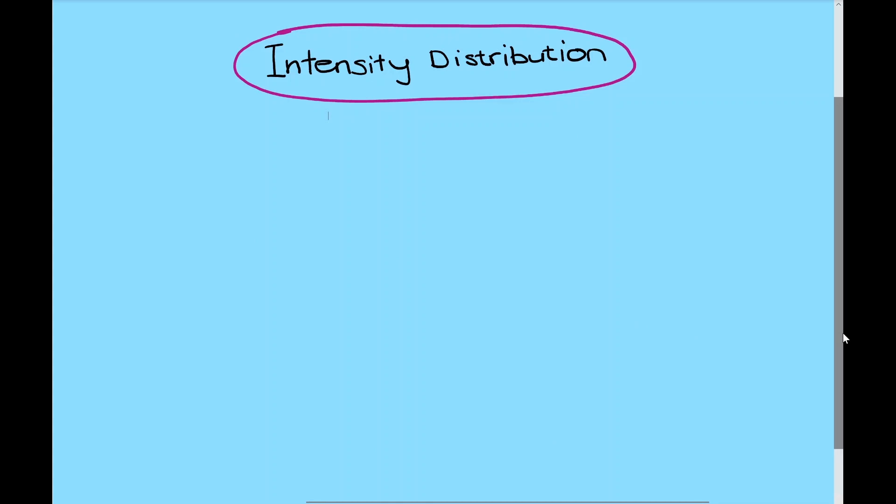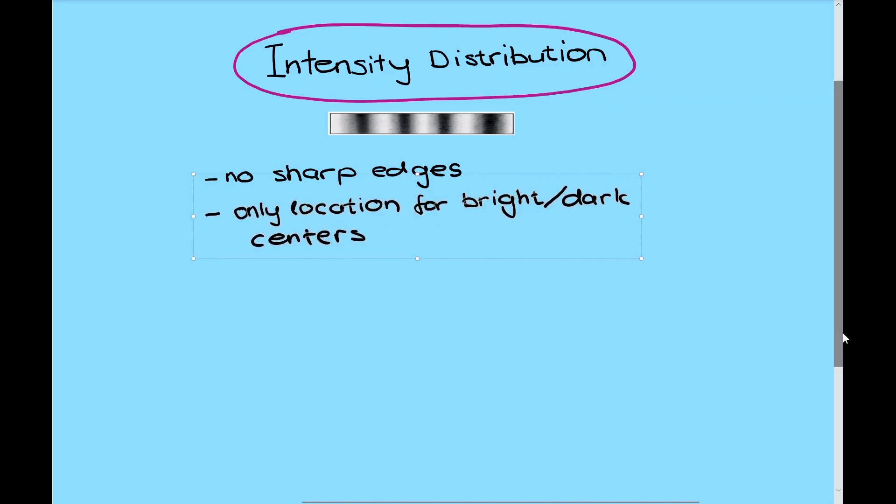Now let's have a look at the intensity distribution of the fringes. Bear in mind that the fringes have no sharp edges. The equation only provides the location for central, bright, or dark. But we still can calculate the distribution of the light intensity across the fringes.